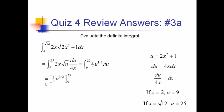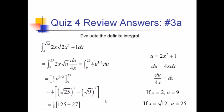Pulling the 1 third out, I multiply it by the subtracted quantities inside parentheses: 25 to the 3 halves minus 9 to the 3 halves. 25 to the 3 halves is the square root of 25 cubed — square root of 25 is 5, cubed is 125. 9 to the 3 halves is the square root of 9 cubed — square root of 9 is 3, cubed is 27. So 125 minus 27 is 98, and 1 third times 98 gives 98 thirds.